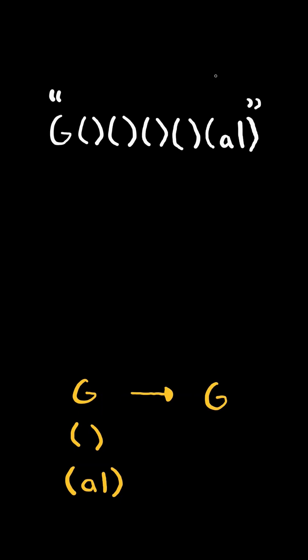where G maps to G, the double brackets maps to o, and the double brackets with al maps to al.